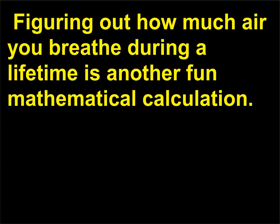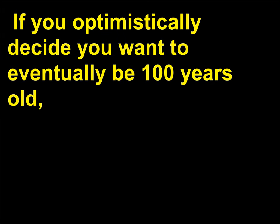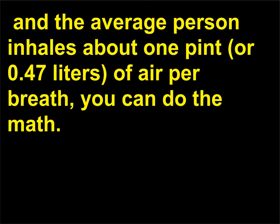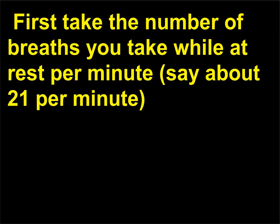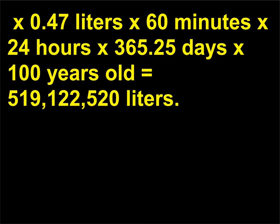Figuring out how much air you breathe during a lifetime is another fun mathematical calculation. If you optimistically decide you want to eventually be 100 years old, and the average person inhales about one pint, or 0.47 liters, of air per breath, you can do the math. First take the number of breaths you take while at rest per minute — say about 21 per minute — then multiply: 21 × 0.47 liters × 60 minutes × 24 hours × 365.25 days × 100 years = 519,122,520 liters. Again, this is only an approximation.